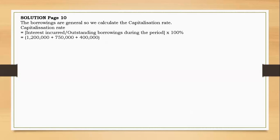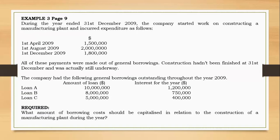You add the interest: $1.2 million, $750,000, and $400,000, over the total loans — that is $10 million, $8 million, and $5 million. You sum the total interest and divide by all the loans.